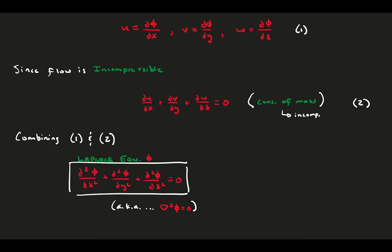This is the Laplace equation for the velocity potential in Cartesian coordinates, but we can also write it out for cylindrical coordinates for completeness.